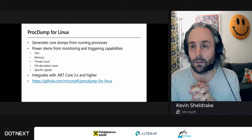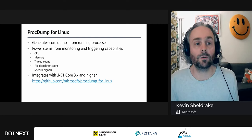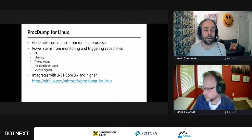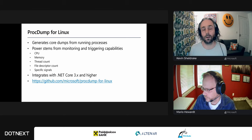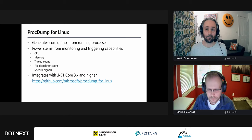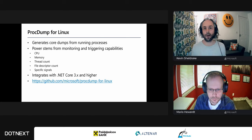Procdump for Linux is a rebuild of the procdump tool from Windows. Procdump generates core dumps from running processes without killing them. If you have processes running awry and want to debug them, you might not want to debug them live because it stops the process — instead you can take a core dump, allow the process to continue, and then analyze the core dump with your favorite debugger.